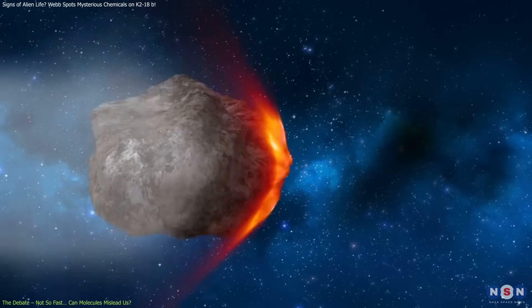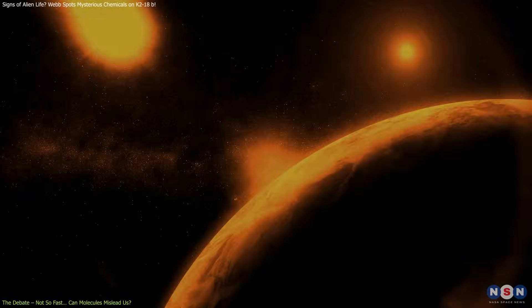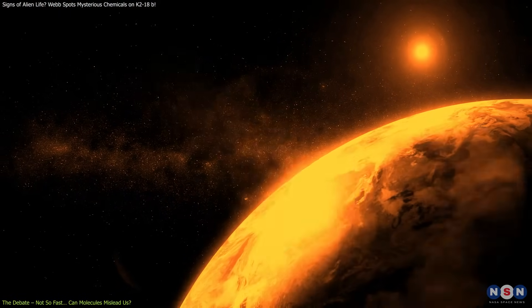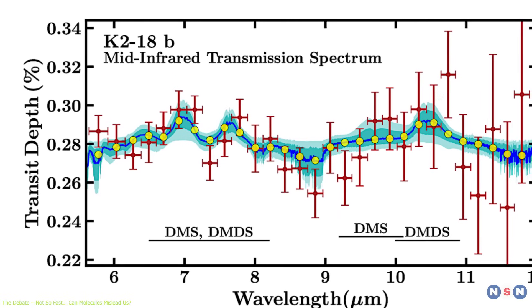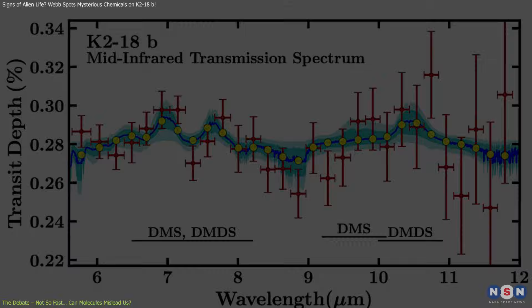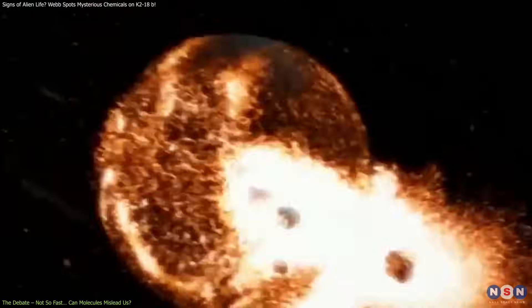Another theory proposes cometary delivery—DMS or its precursors could have been brought in by frequent impacts. But to account for the observed concentrations, this bombardment would have to occur at an implausibly high rate, which most experts consider unlikely.